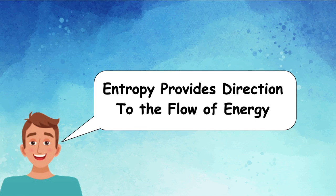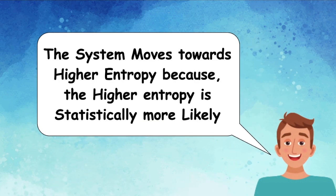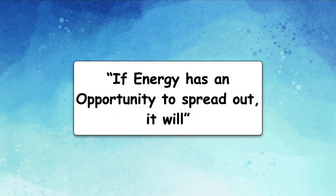So what we can summarize from this video is that a system moves towards higher entropy because higher entropy is statistically more likely. Whatever system you have, if there is possibility of having higher entropy it will move towards that. The summary in two lines: if energy has an opportunity to spread out, it will.